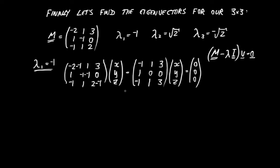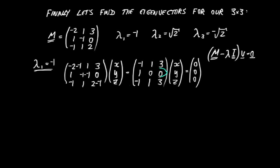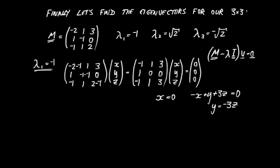What we immediately notice is that, as before, we don't really have three different equations — we only have two. In fact, this is very obvious here because the bottom row is the same as the top row. It's not always the case that the rows are actually identical, but we will always find that there are only two independent equations when dealing with 3x3 eigenvalue problems. The middle row 1, 0, 0 is just saying x equals 0. From either the top or bottom row: minus x plus y plus 3z equals 0, or y equals minus 3z.